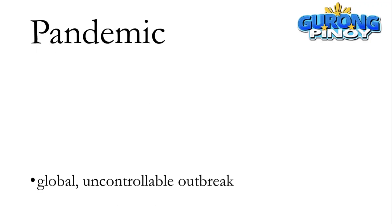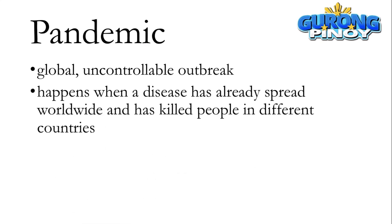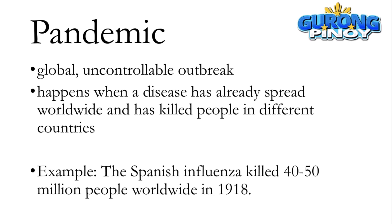Pandemic — this is a global and uncontrollable outbreak. This happens when a disease has already spread worldwide and has killed people in different countries. Example: the Spanish influenza killed 40 to 50 million people worldwide in 1918.